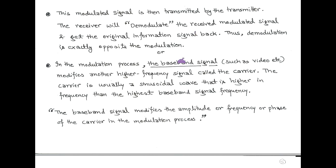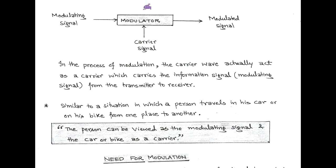In the modulation process, the baseband signal — such as video or voice — modifies another high-frequency signal called the carrier signal. The carrier signal is usually a sinusoidal signal of high frequency. The frequency of the carrier signal is much larger than the message signal, and the message signal modifies the amplitude, frequency, and phase of the carrier in the modulation process. At the transmitter side, we use an electronic circuit called a modulator. The inputs of the modulator are the modulating signal (or message signal) and the carrier signal. After the modulation process, the output of the modulator is called the modulated signal.